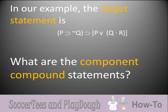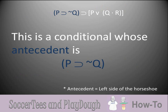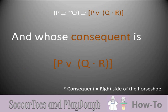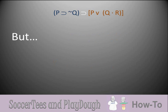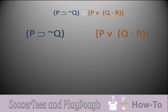In our example, with target statement P horseshoe tilde Q horseshoe P wedge Q dot R, what are the component compound statements? This statement is a conditional whose antecedent is P horseshoe tilde Q, or 'if P then not Q,' and whose consequent is P wedge Q dot R, or 'either P or Q and R.' But each of these two component parts actually have compounds as parts of them. The antecedent 'if P then not Q' contains tilde Q, which is itself a compound statement. And for the consequent P wedge Q dot R, the expression Q dot R is itself a compound statement. So tilde Q is going to need its own column, and Q dot R is going to need its own column as well.